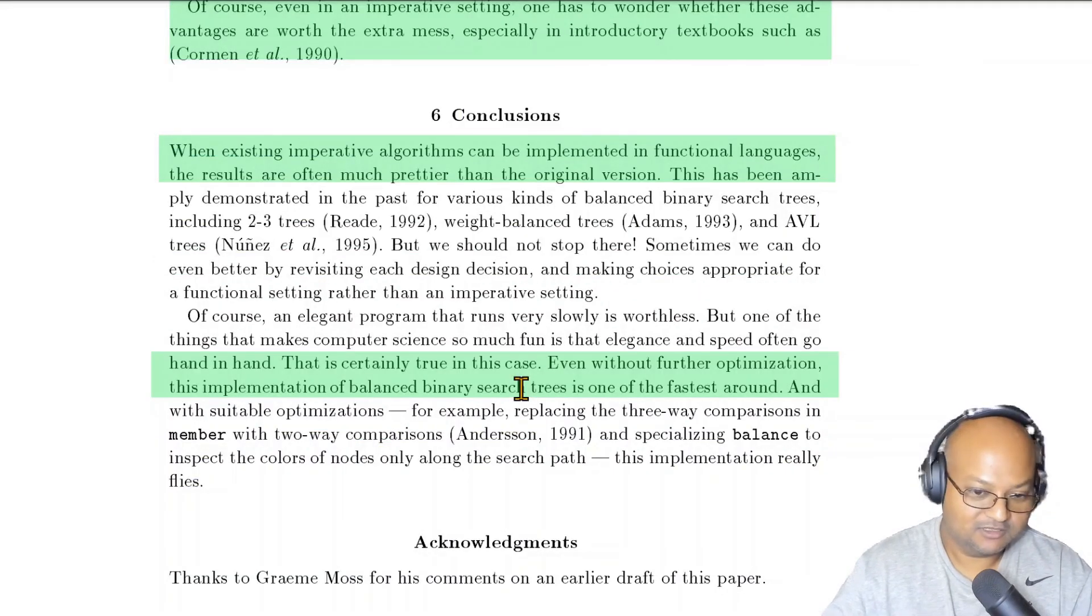So that was a quick look at a purely functional implementation of red-black trees in about 15 or 20 lines of Haskell code where the author proposes a much cleaner and a much simpler way to rebalance red-black trees. I hope you enjoyed that and I will see you next time. Thank you very much.